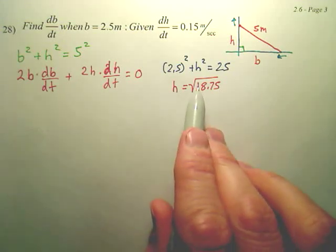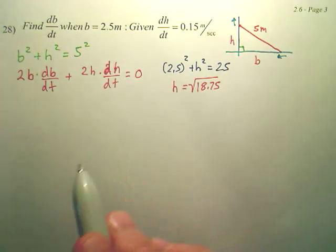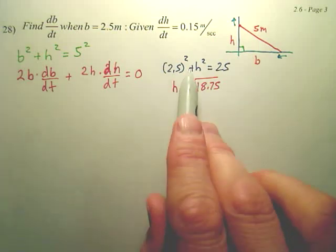If I solve this, I end up with h equaling the square root of 18.75. Now do we care about the negative? You don't need negatives when dealing with distance. That ends it being h when you solve this.